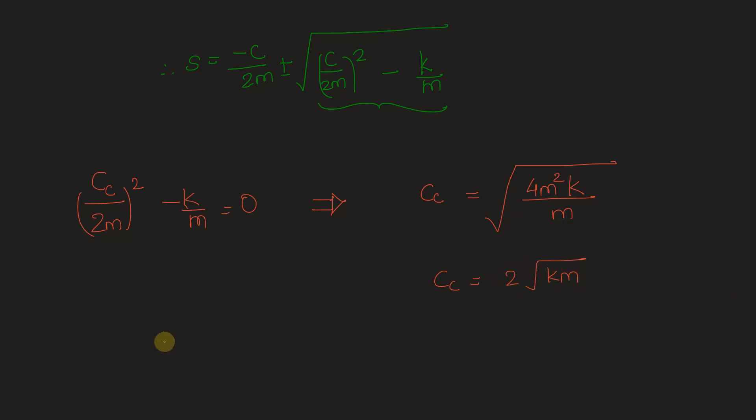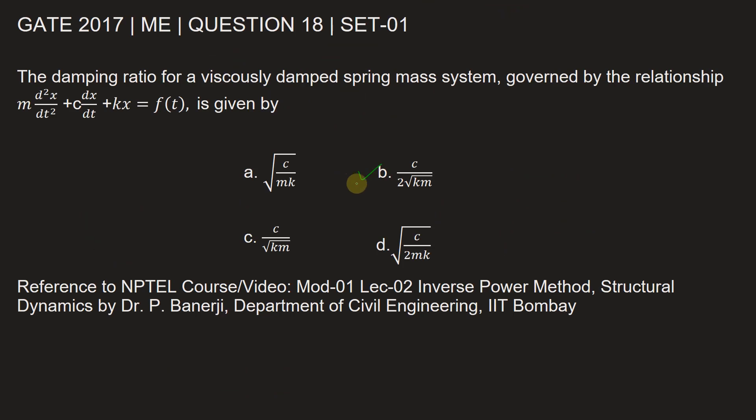Putting it in the definition of ζ, we get damping ratio ζ = c/(2√(km)). Hence our answer is option B, that says damping ratio for this viscously damped spring-mass system is given as c/(2√(km)).